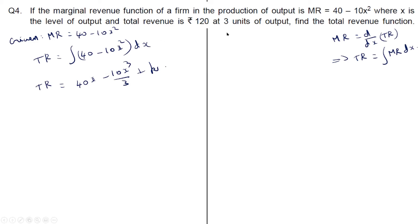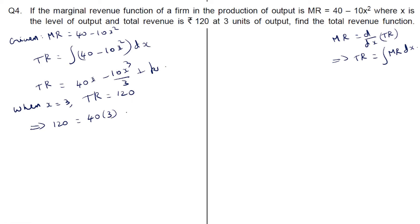When x equals 3 units, total revenue equals 120, so we can find k. Substituting: 120 equals 40 into 3 minus 10 times 3 cubed by 3 plus k. 40 into 3 is 120, and 10 times 3 squared is 90. So these cancel and we get 0 equals 90 minus k, giving k equals 90.